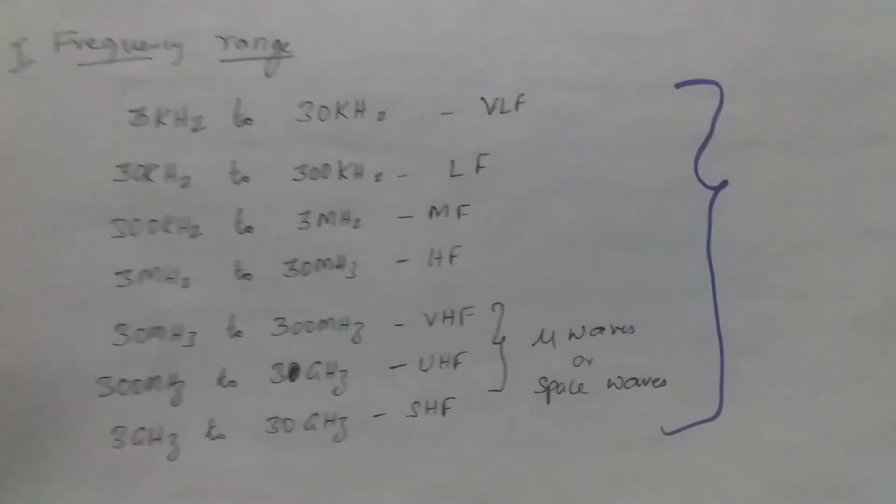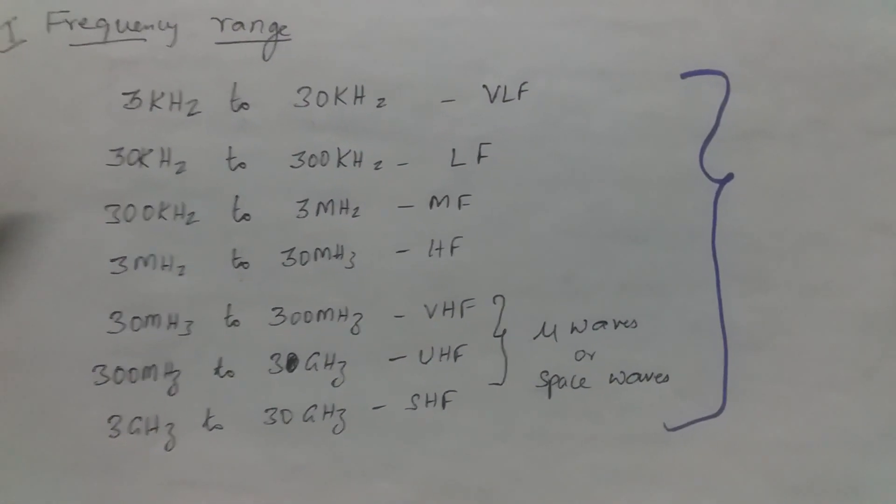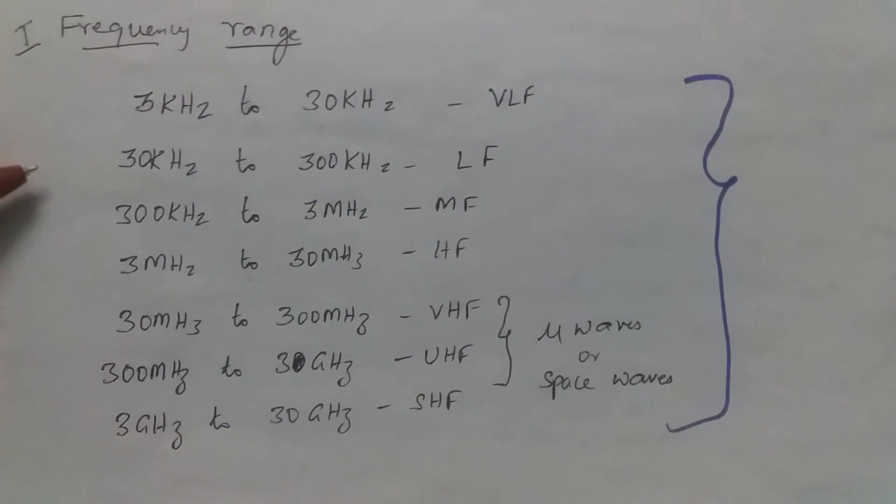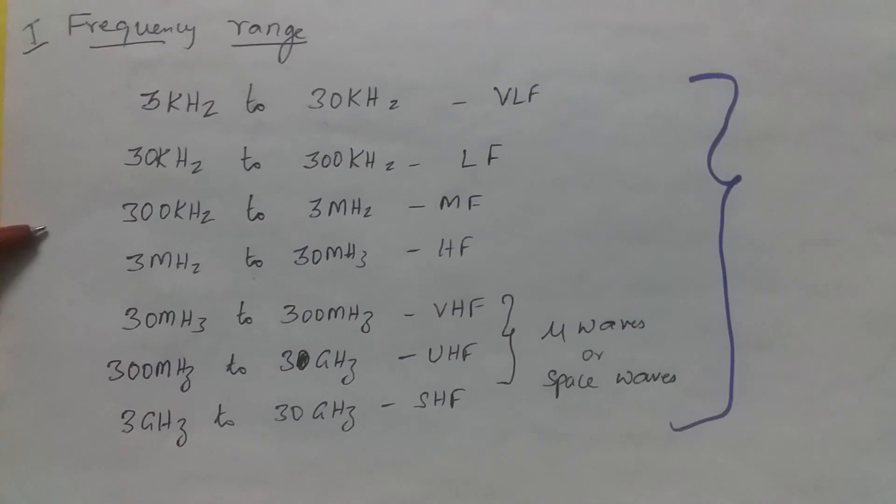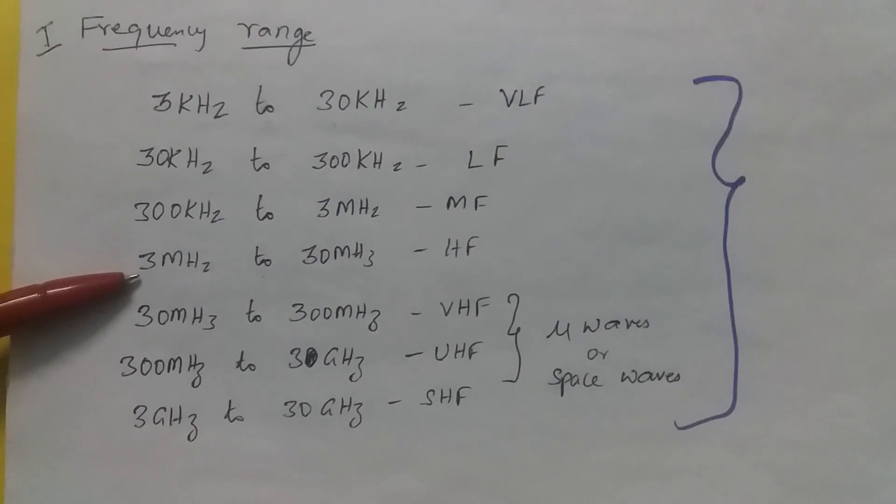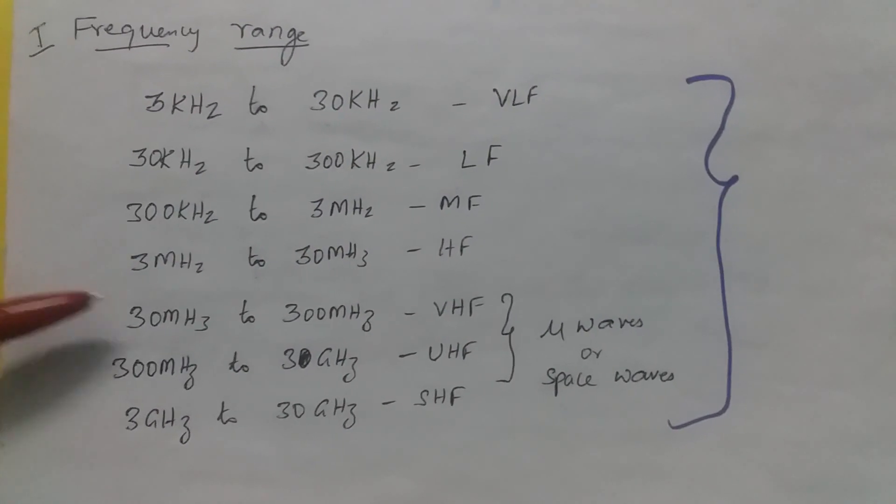From 3 kHz to 30 kHz, we call it VLF, very low frequency. From 30 kHz to 300 kHz, we call it low frequency range. From 300 kHz to 3 MHz, we call it medium frequency range. From 3 MHz to 30 MHz, we call it high frequency range.